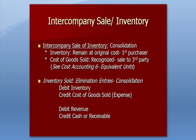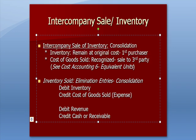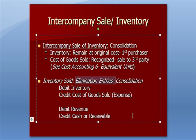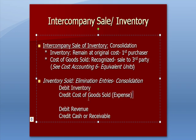What if we sell from one parent to a sub or the reverse? In consolidation, we need to make sure that the inventory remains at the original cost of the first purchaser, the person who originally bought it. And also that once we sell that inventory to a third party outside the company, we then recognize cost of goods sold. In consolidation, we're going to have elimination entries where we reverse those entries. We're going to put the inventory back on the books and reduce cost of goods sold by crediting. We're going to reduce revenue by debiting and reduce cash or the receivable.